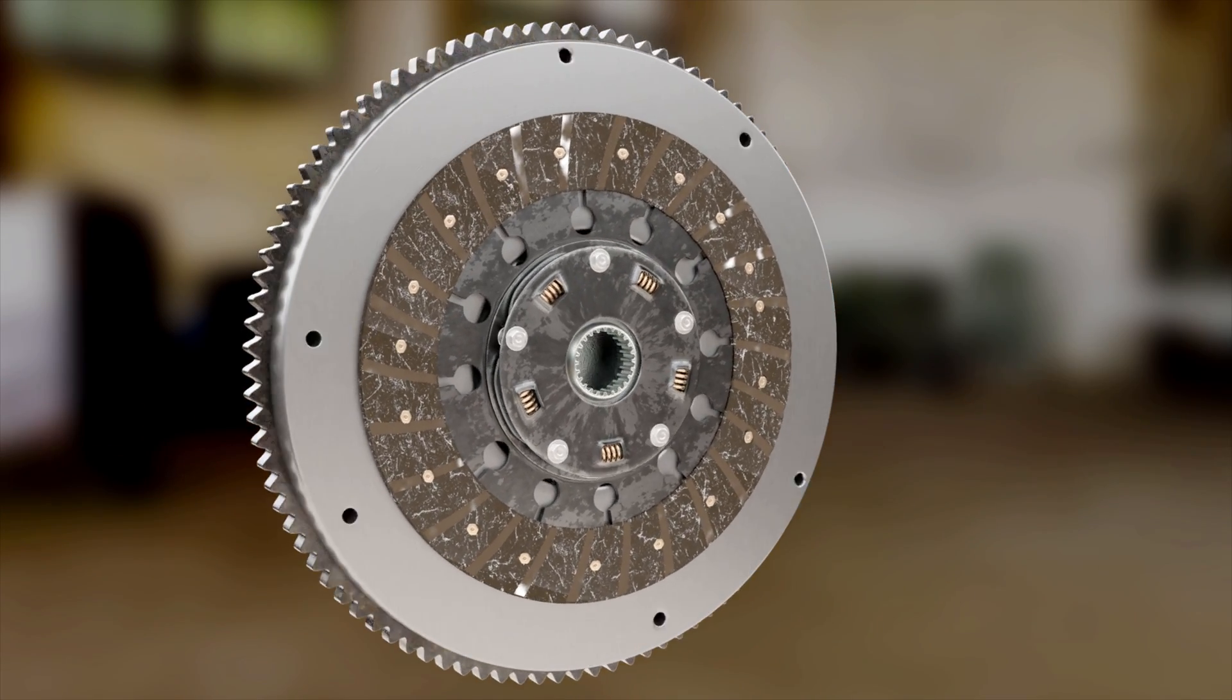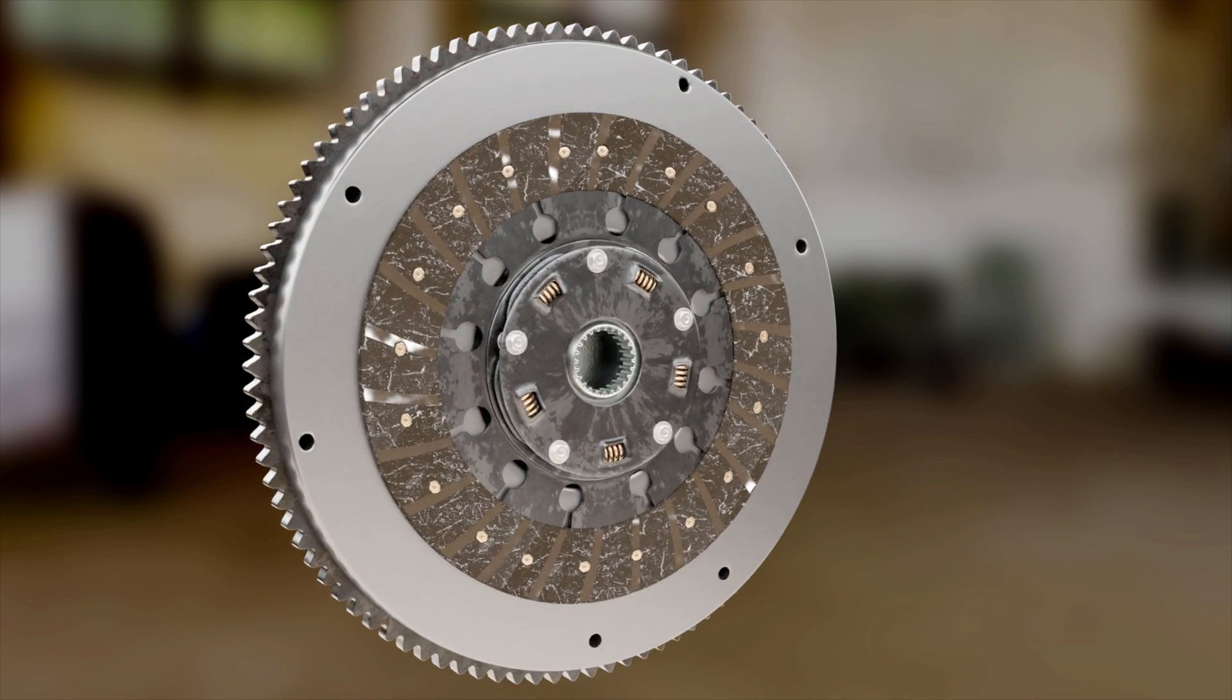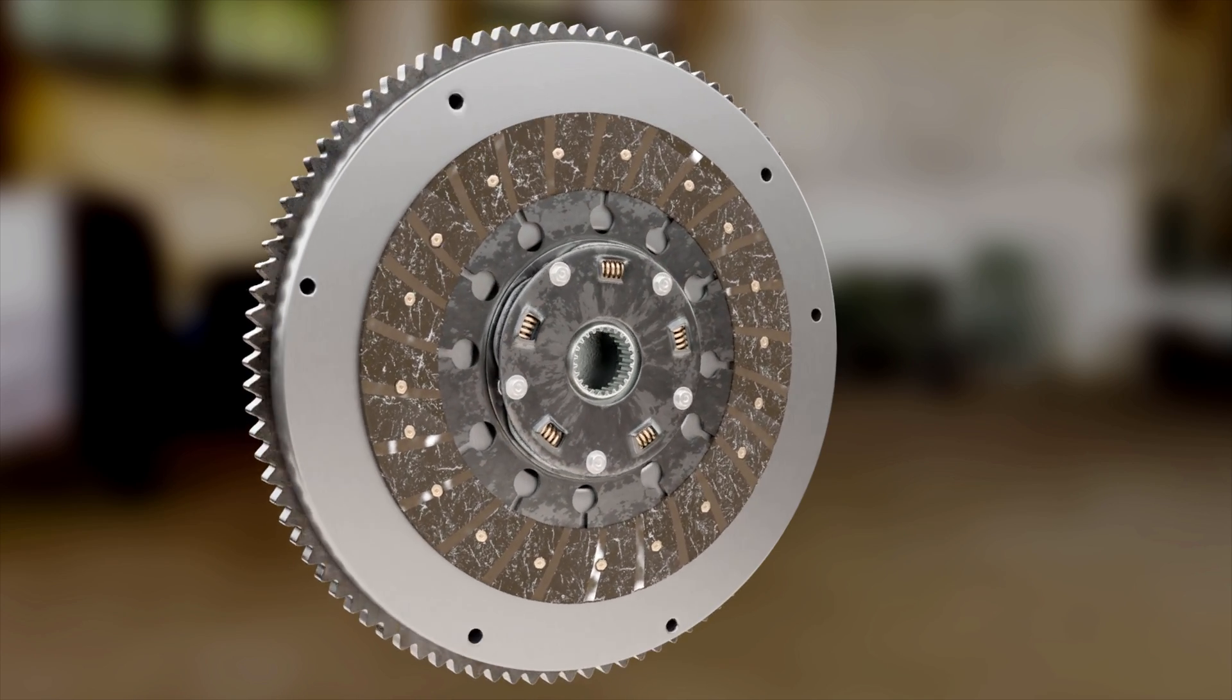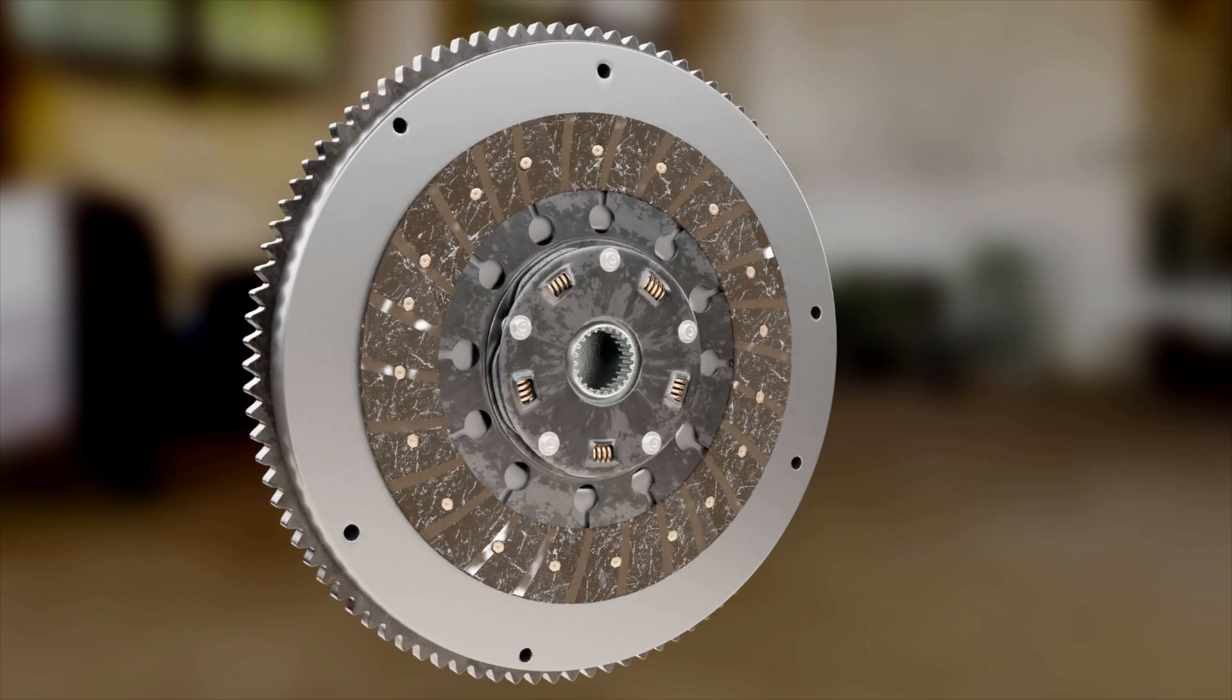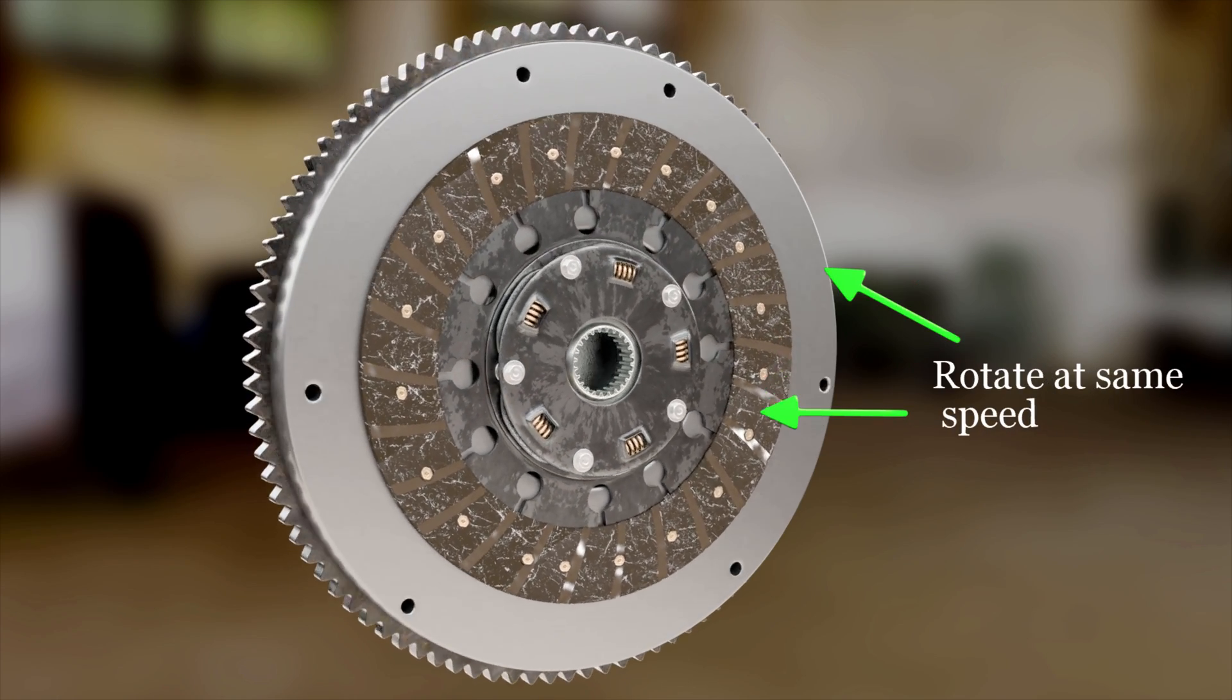As the axial force is increased gradually, the force of friction increases and the clutch plate starts to rotate at the same speed as the flywheel.